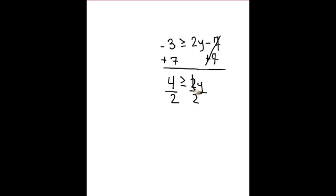Divide by 2. Now we've got 2 ≥ y. And what I'm going to do is just to make it easier to read, I'm going to reverse it. I'm going to write y, and since I flipped the side, I'm going to flip the sign. So y ≤ 2. That's a little easier to read.